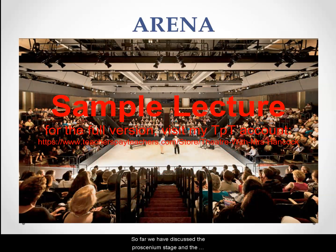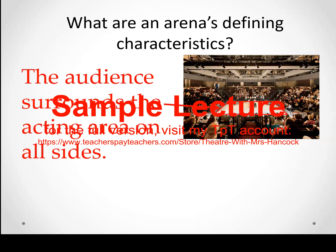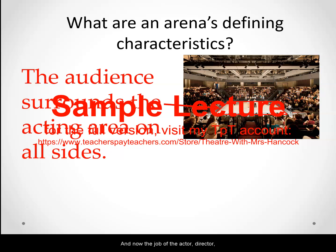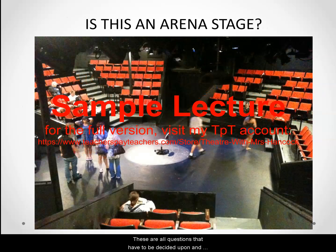So far we have discussed the proscenium stage and the thrust stage. Next up is the arena stage. What are an arena's defining characteristics? Comparing the arena to a thrust or proscenium, how is it different? As you can see, the audience surrounds the acting area on all sides. The jobs of the actor, director, and set designer become more complicated: where do you put the scenery without blocking the audience's view? How does an actor move and stand so as not to leave their back exposed too much to one side of the audience? How do actors enter and exit the space? These are all questions that have to be resolved by the various designers, director, and actors.